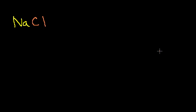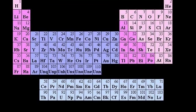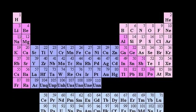Let's say I have the molecule sodium chloride. Looking at the periodic table, sodium is an alkali metal — it has one valence electron in group one, so it really wants to give it away. Chlorine is a halogen, and it's only one electron away from having a full eight valence electrons in its outermost shell. So it really wants to take one electron.